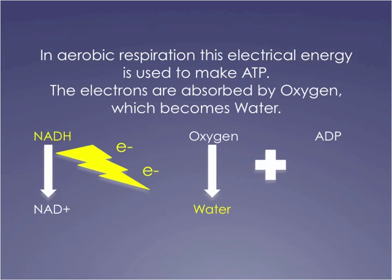On its way from NADH to water, the electrons do a lot of work. That work spins a little molecule called ATP synthase — a really awesome molecule that looks exactly like a little nanomachine, actually spinning around in a circle. As it spins, it's taking ADP, slamming them together, and making ATP. That's aerobic respiration in a very tiny nutshell.